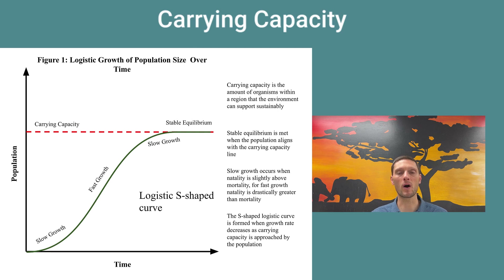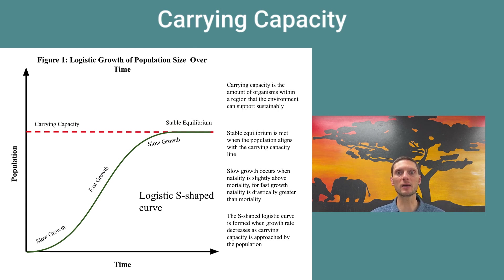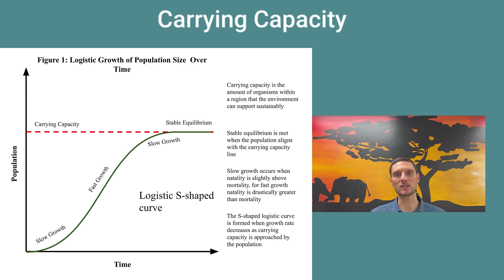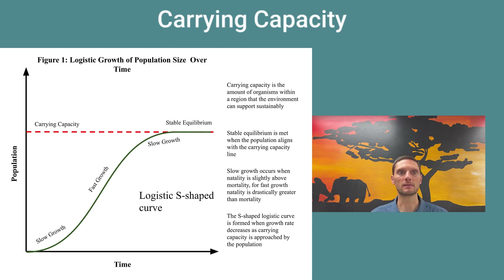Generally, one or two limiting factors define the carrying capacity. For plants, it's typically water, light, and soil nutrition. For animals, it's water, space for breeding, food, and potentially dissolved oxygen depending on the ecosystem. The population will grow and drop depending on resource availability, and it will fluctuate around the carrying capacity — kind of an up-and-down in population size as the population approaches the overall carrying capacity.